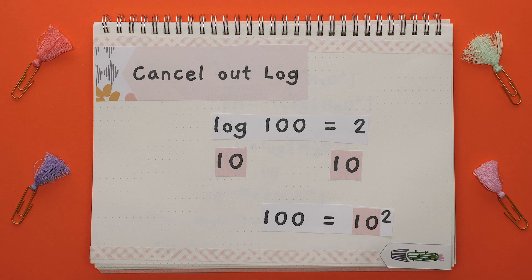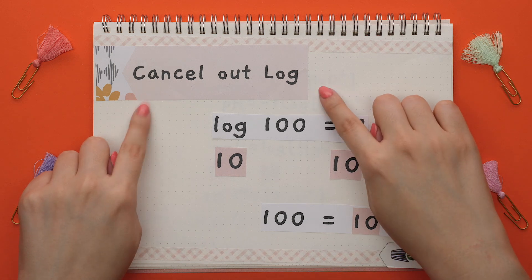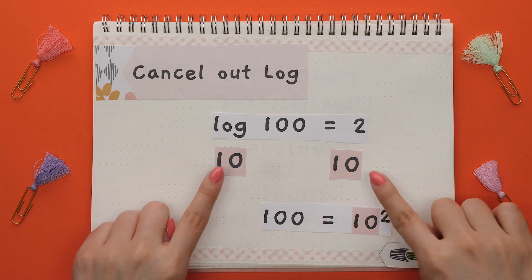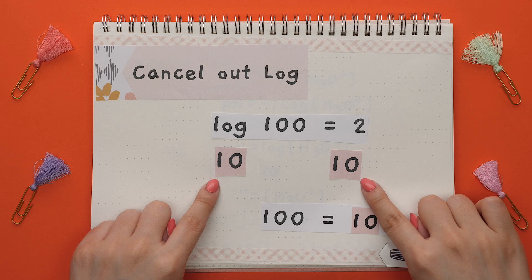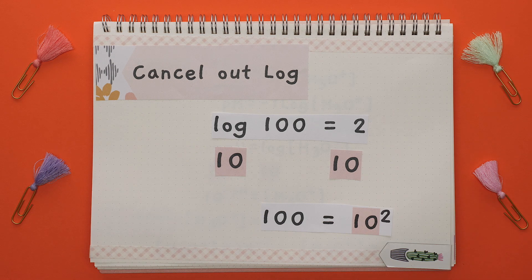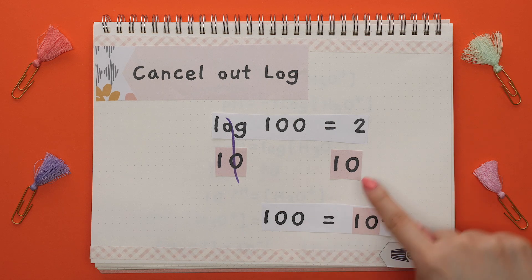This next part is very important. To cancel out a log with a base of 10, you take the anti-log of both sides, which is really just taking base 10 of both sides. The logs cancel and you are left with the value and this is now an exponent.